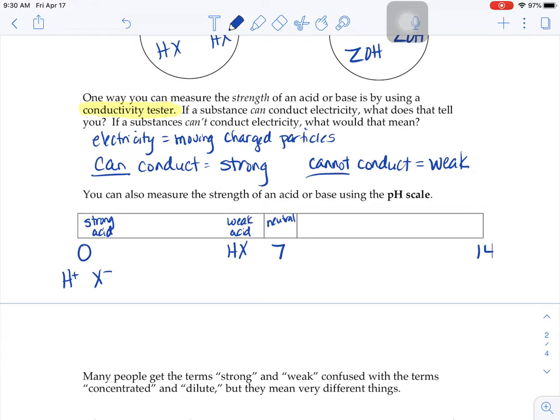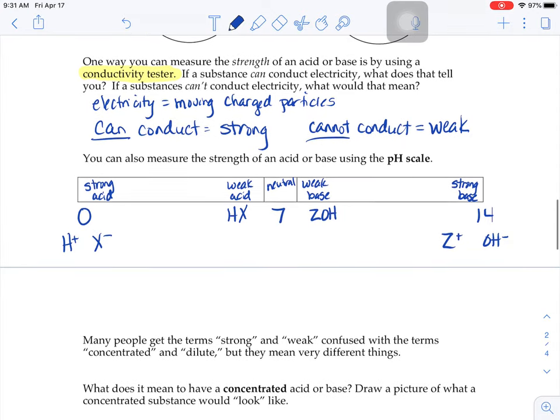On the other side, if you have a strong base, lots of hydroxide ions floating around. Then it would be Z plus OH minus. If it's a weak base, mostly molecules where it's Z OH together, there's not a lot of OH minus floating around separate and free for your pH detector to sense. And so it gives you a pH still on the basic side because you might have one hydroxide ion floating around there all by itself. But since it's mostly in molecule form, we would have a slightly basic pH.